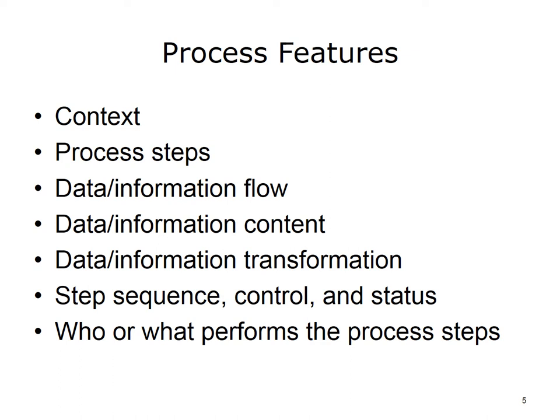The six important process aspects are: context, process steps, information flow, information content, information transformation, sequence, and other control — who or what role performs the step. Unfortunately, the words used to describe the process aspects have different connotations and even meanings in different disciplines. Briefly, by context, we mean how a system or process interacts with the rest of the world.